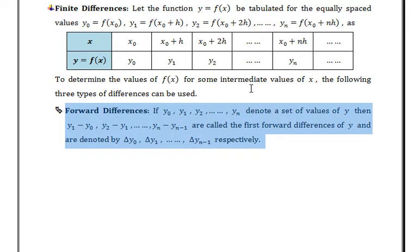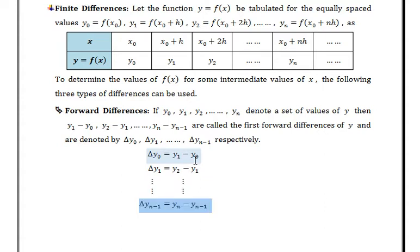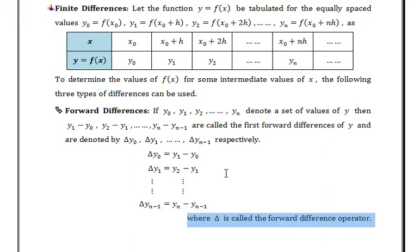If y0, y1, y2, up to yn denote a set of values of y, then y1 - y0, y2 - y1, up to yn - yn-1 are called the first forward differences of y, and are denoted by Δy0, Δy1, up to Δyn-1 respectively. That is, Δy0 = y1 - y0, Δy1 = y2 - y1, up to Δyn-1 = yn - yn-1, where Δ is called the forward difference operator.